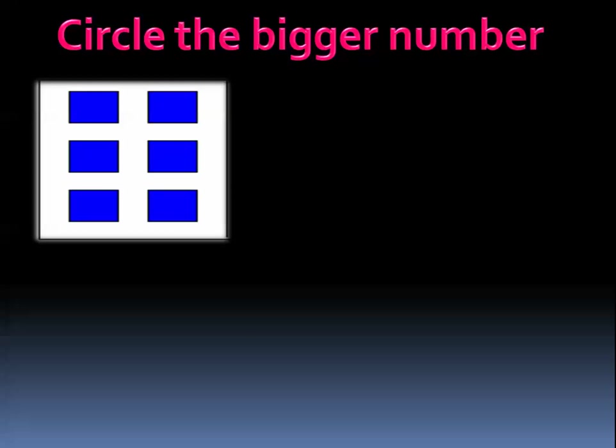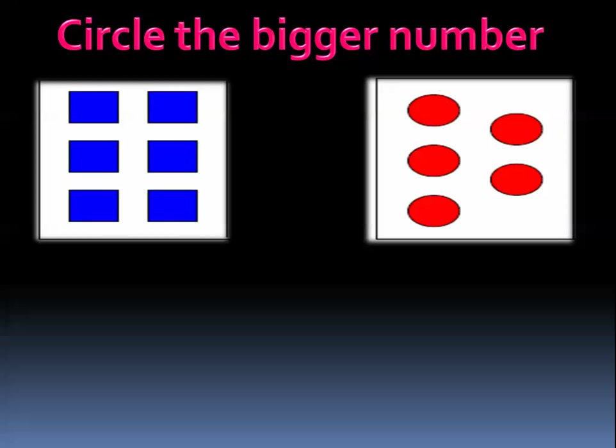In this exercise, we are gonna circle the bigger number. We will count two sets of objects and see which has the bigger number, then circle it. Let's count these rectangles: one, two, three, four, five, six. And how many circles? One, two, three, four, five. So we have six rectangles and five circles. The bigger number is six. Circle it. Excellent.